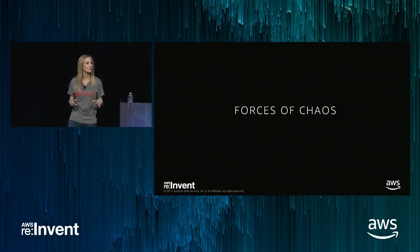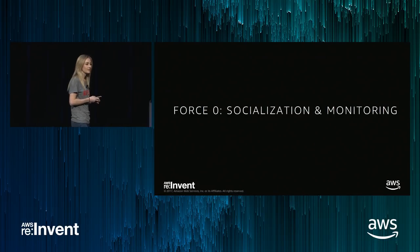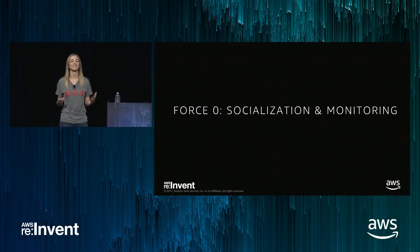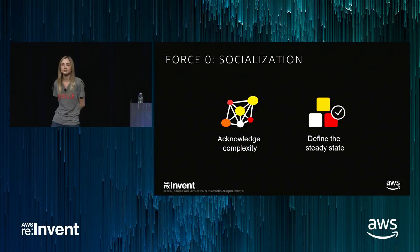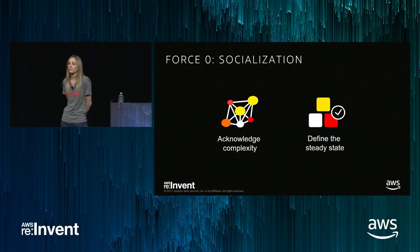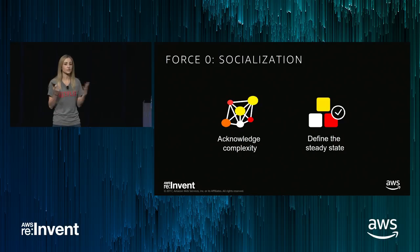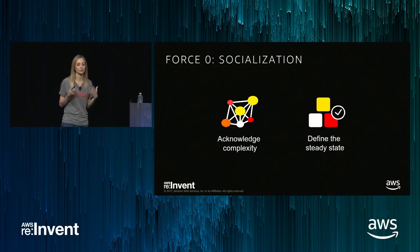There are a bunch of different forces of chaos that we can introduce when we're advocating for it. Force zero: socialization and monitoring. These are two things of utmost importance before you begin your journey into chaos, before you even begin writing code. You need to make sure that you understand your company's culture and you have good monitoring in place. When I say socialization, two things: acknowledge the complexity of your systems, whether you're a startup or a large-scale internet company. And you also need to define the steady state — what is normal, what is our hypothesis, how does our system behave when it's behaving normally?